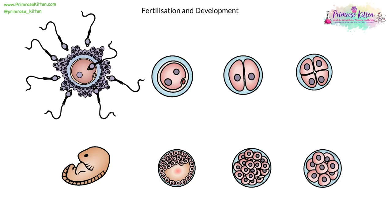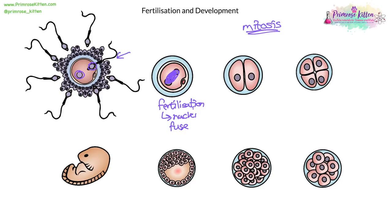Once the sperm swims up to the egg and burrows its way through, the two nuclei will fuse into one single nucleus — that's called fertilization. Then cell division starts, called mitosis, because it's division of diploid cells. It goes from two cells to four cells to eight cells and onwards. An eight-cell embryo has a lot of stem cells, so if an embryo is being grown to be harvested for stem cells, it would be grown to the eight-cell stage.